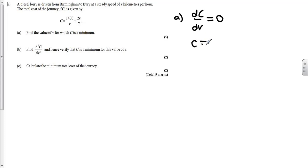I'm going to rewrite the cost in a form that we can easily differentiate, and that means I have to change it from over v to v to the minus one. And I'm just going to change very slightly to write 2/7 v rather than 2v over 7. They're exactly the same, but it just clarifies things a little bit in terms of differentiation.